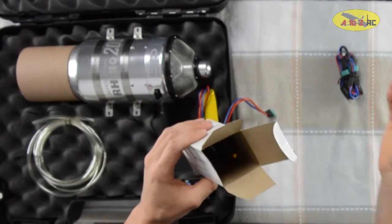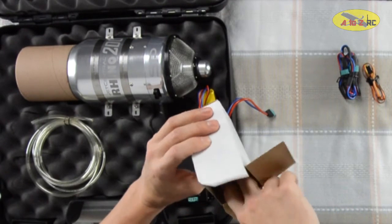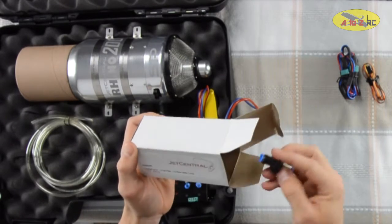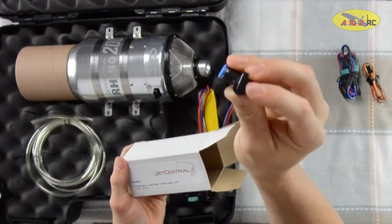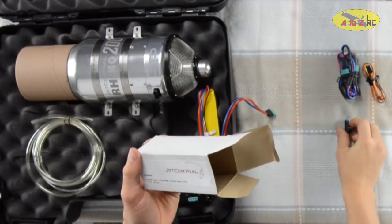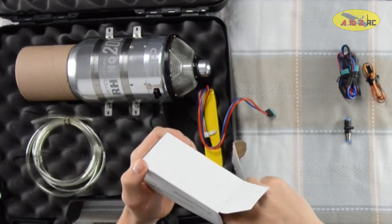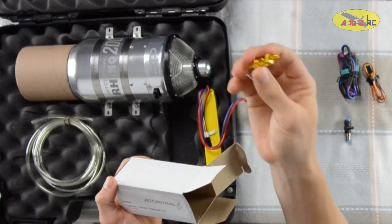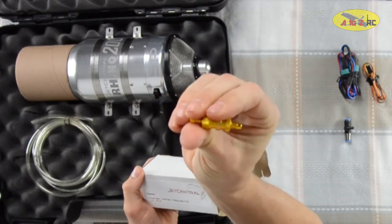We have a few servo connections. We also have the on-off valve that Jet Central will send with you. They also send you a fuel filter. This one is made by Hangar 9.